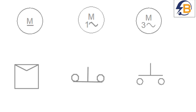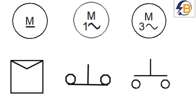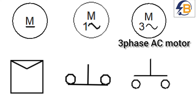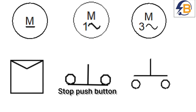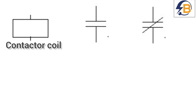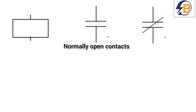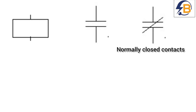When we come to motor control wiring, here are some basic symbols used when drawing motor control circuits. This is the symbol for a DC motor. This symbol represents a single-phase induction motor. This is the symbol for a three-phase induction motor, and this symbol represents a motor starter. There is also a symbol for a stop push button and a symbol for a start push button. This symbol represents a contactor coil. This symbol represents normally open contacts — which could be contacts of a contactor or a relay. And this last one represents normally closed contacts.